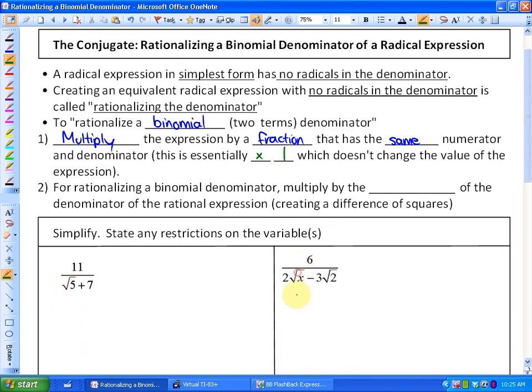However, what we're going to multiply by looks different. For rationalizing a binomial denominator, what we're going to do is multiply by, this is a new term, by the conjugate of the denominator of the rational expression, which essentially creates a difference of squares. You'll see how that works.